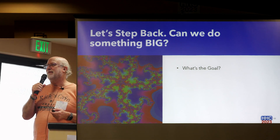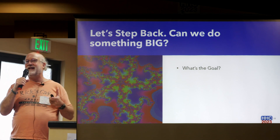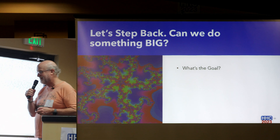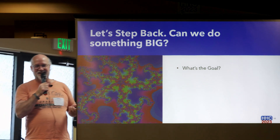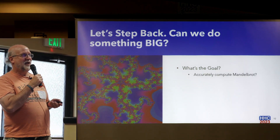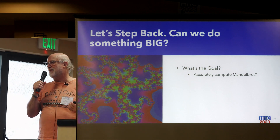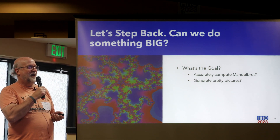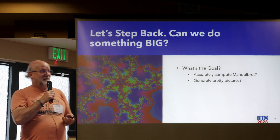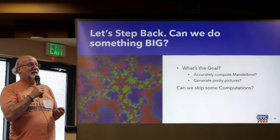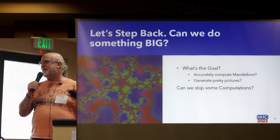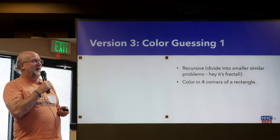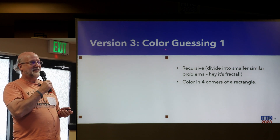The integer stuff didn't work, so let's think about something big — what can really cut down on computation? For that we'll take a step back and think about what the goal actually is. Are we trying to accurately compute the Mandelbrot set for academic calculations? No. We are trying to generate pretty pictures. So, can we skip some computations? We're not interested in 100% accuracy — we just want it to look cool. This leads to the color guessing algorithm.